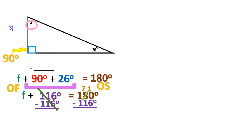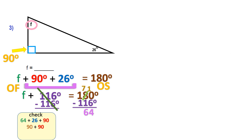Borrowing to solve 180 minus 116: 10 minus 6 is 4, and 7 minus 1 is 6 — so F equals 64. Checking: plug 64 into the original expression: 64 plus 26 plus 90. Grouping 64 plus 26 gives 90, and 90 plus 90 is 180. Math is good — F equals 64 degrees.